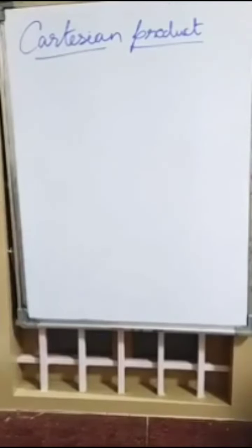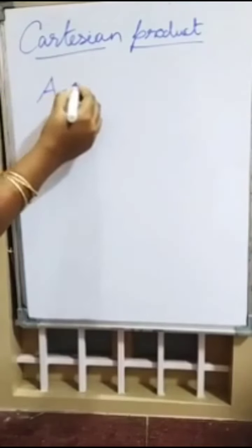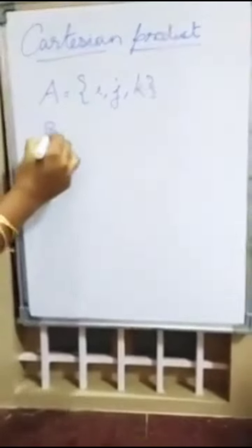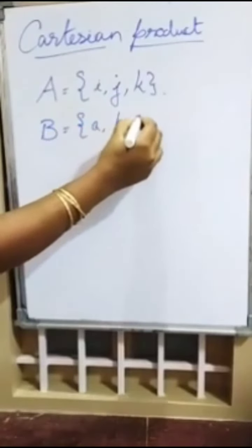In Cartesian product, let us consider two sets. Capital A is equal to I, J, K. Capital B is equal to small a, b, c.